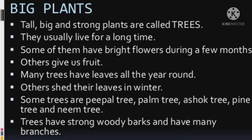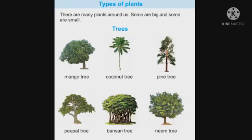Trees have strong woody barks and many branches. Trees stand erect — erect means they stand straight. They have a thick brown and woody stem called trunk. Trees give us shade, fruits and wood. A few examples of trees are mango tree, coconut tree, pine tree, peepal tree, banyan tree and neem tree.